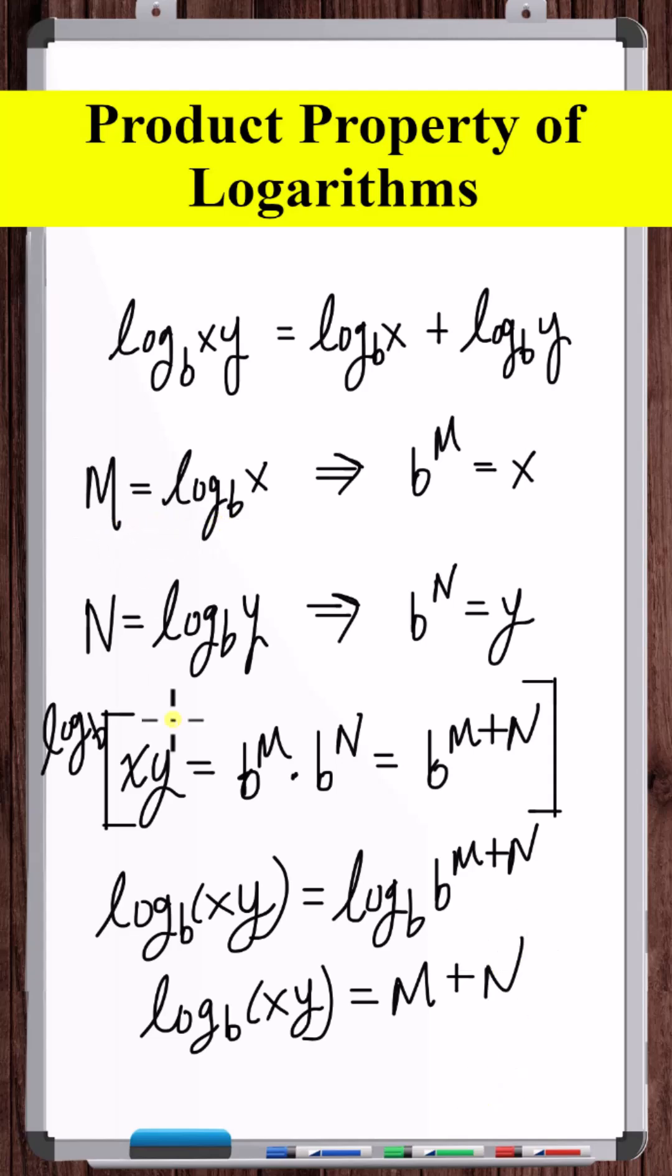But m is equal to log base b of x and n is equal to log base b of y. So this results in the product property.